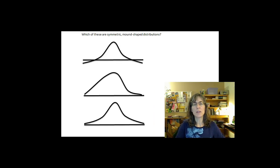If you have a distribution that's shown as a graph, you can determine from the characteristics of it whether it is a symmetric mound-shaped distribution or not. And let's take a look at a few of those graphs.